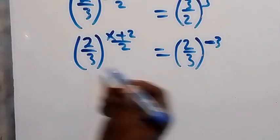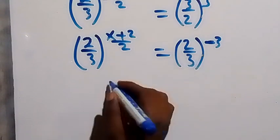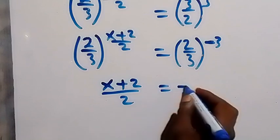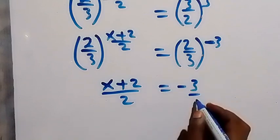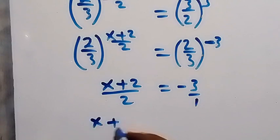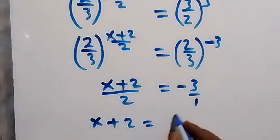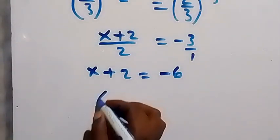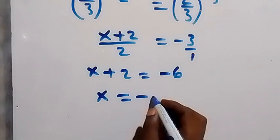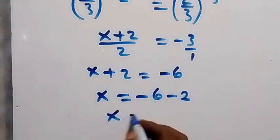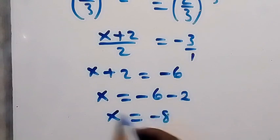Now we have the same base on both sides, so we can equate the powers. This gives us (x plus 2) over 2 equals minus 3, which is minus 3 over 1. Cross-multiplying gives x plus 2 equals 2 times minus 3, which is minus 6. Taking 2 to the other side, x equals minus 6 minus 2, so x equals minus 8.